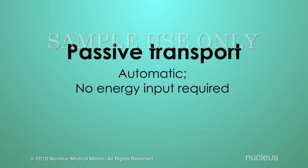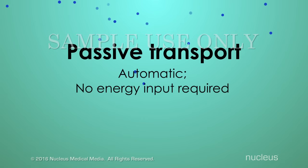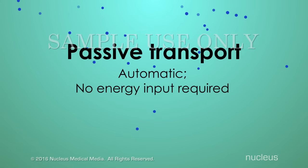The first category is passive transport. For a cell, passive transport means it's an automatic process that doesn't require any input of energy.